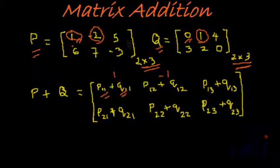And P13 is 5, Q13 is 4, hence 5 plus 4 will give us 9. P21 is 6, Q21 is 3, so 6 plus 3 gives you 9.